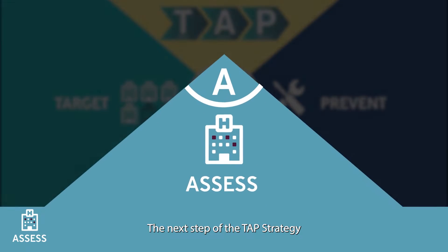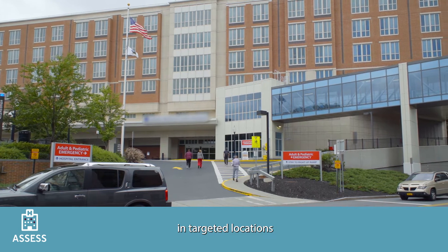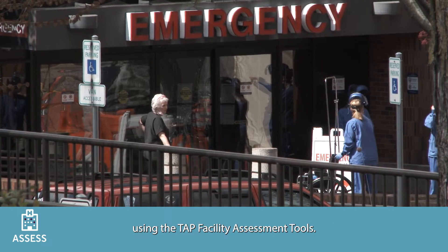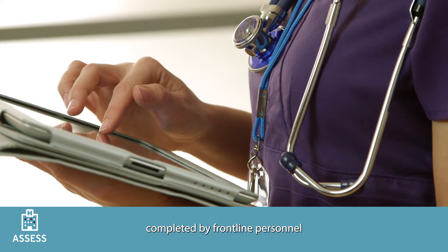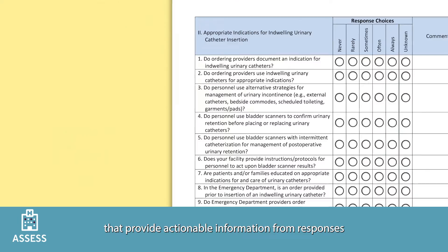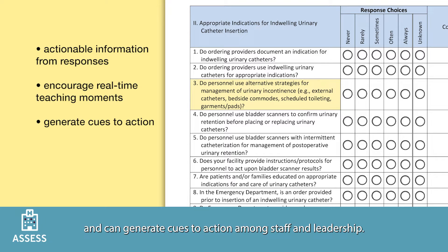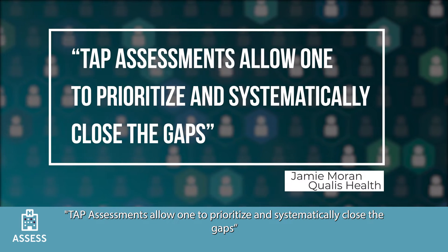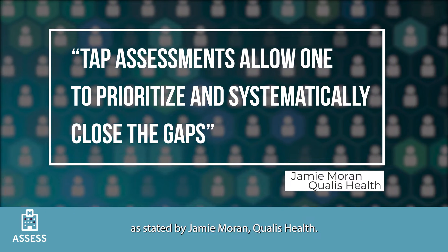The next step of the TAP strategy is to assess infection prevention practices in targeted locations to identify opportunities for improvement using the TAP facility assessment tools. These are comprehensive assessments completed by frontline personnel that provide actionable information from responses, encourage real-time teaching moments, and can generate cues to action among staff and leadership. TAP assessments allow one to prioritize and systematically close the gaps, as stated by Jamie Moran of Qualys Health.